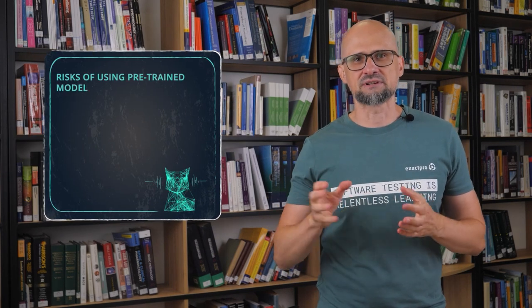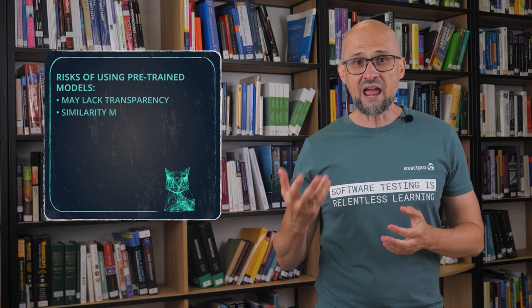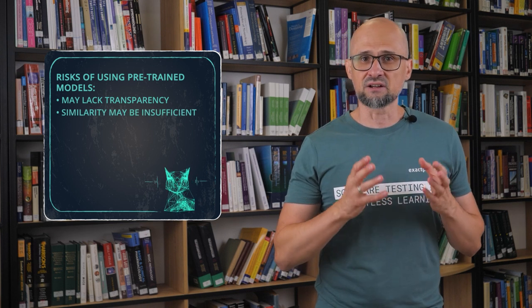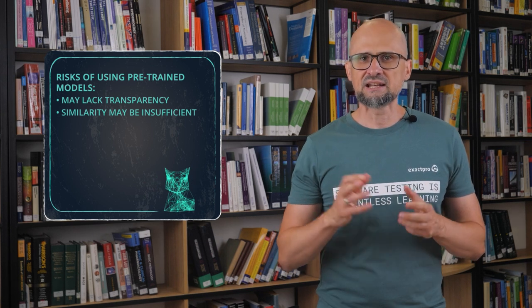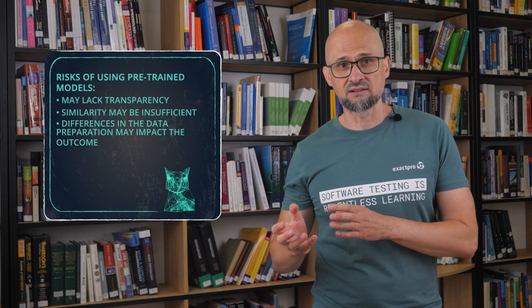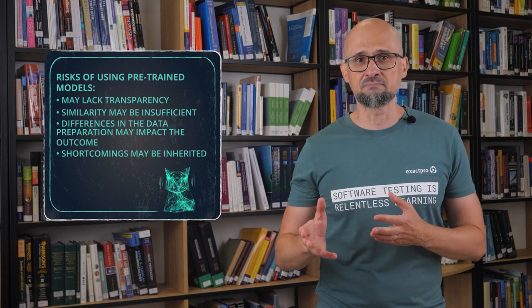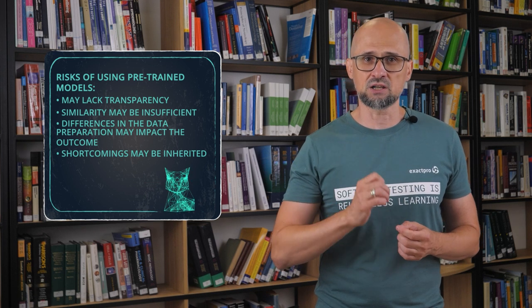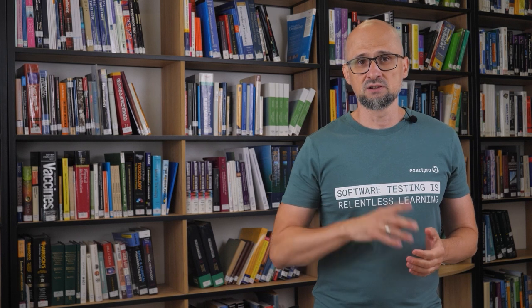Using pre-trained models, of course, carries some risks. These include: they may lack transparency compared to the internally generated ones. The level of similarity between the function performed by the pre-trained model and the required functionality may be insufficient. Also, this difference may not be understood by the data scientist. Differences in the data preparation steps used for the pre-trained model when originally developed and the data preparation steps when this model is deployed may impact the resulting functional performance. The shortcomings of a pre-trained model are likely to be inherited by those who reuse it and may not be documented. A model created through transfer learning is highly likely to be sensitive to the same vulnerabilities as the pre-trained model on which it is based. Note that several of the aforementioned risks can be easily mitigated by having thorough documentation available for the pre-trained model.